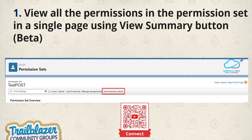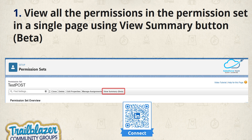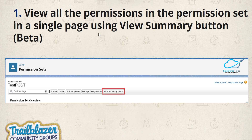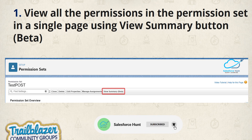The next feature is viewing all permissions in a permission set on a single page using the 'View Summary' button — still in beta but we can see it. Once you go to the permission set, you will see a button called 'View Summary'. Clicking it shows permission set groups, system and app permissions, object-level permissions, and field-level permissions associated with that permission set.